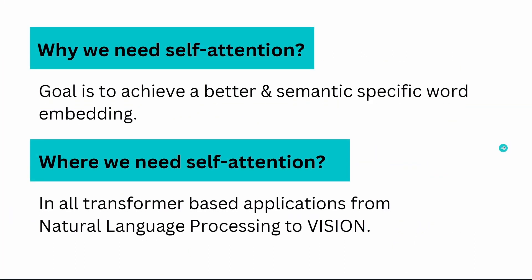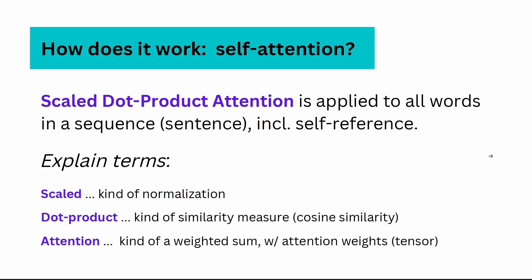Why we need self-attention: we want to achieve a better and semantic specific word embedding. Where do we need self-attention? In all transformer based applications. Wherever you have a transformer, an encoder, a decoder, this covers the complete sector of natural language processing up to vision. This is where self-attention is happening.